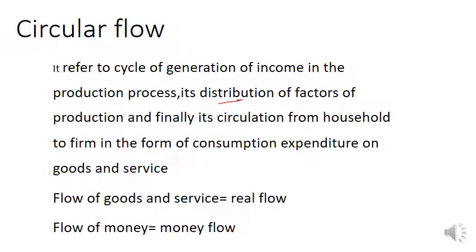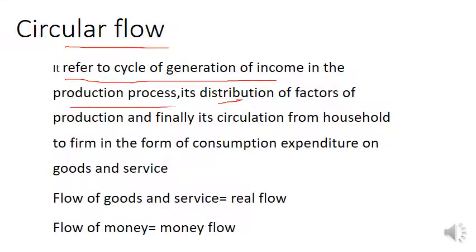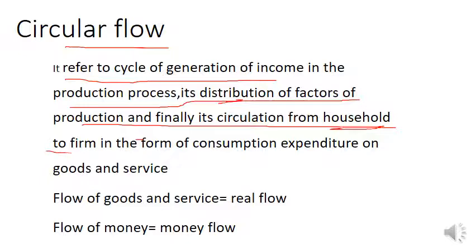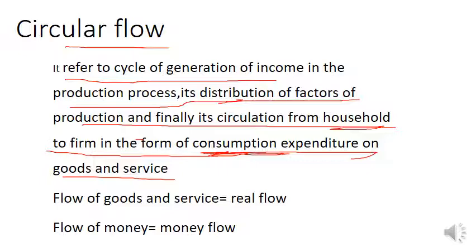Let's look at the definition. What is the definition of circular flow of money? It refers to a cycle of generation of income. What is the production process? The distribution of factors of production — the four factors — first goes to the household. This is the factors of production. If goods are produced, the expenditure comes from the household, who consumes goods and services.